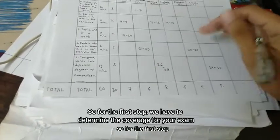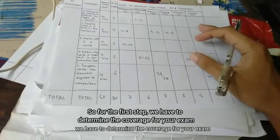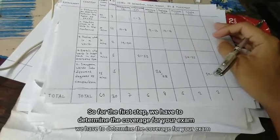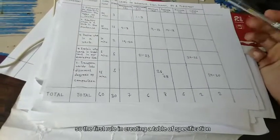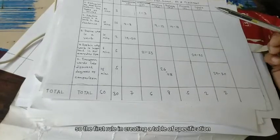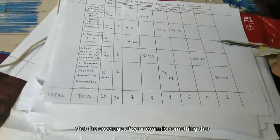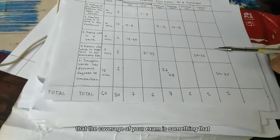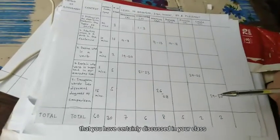So for the first step, we have to determine the coverage for your exam. The first step in creating a table of specification is to make sure that the coverage of your exam is something that we have certainly discussed in our class.